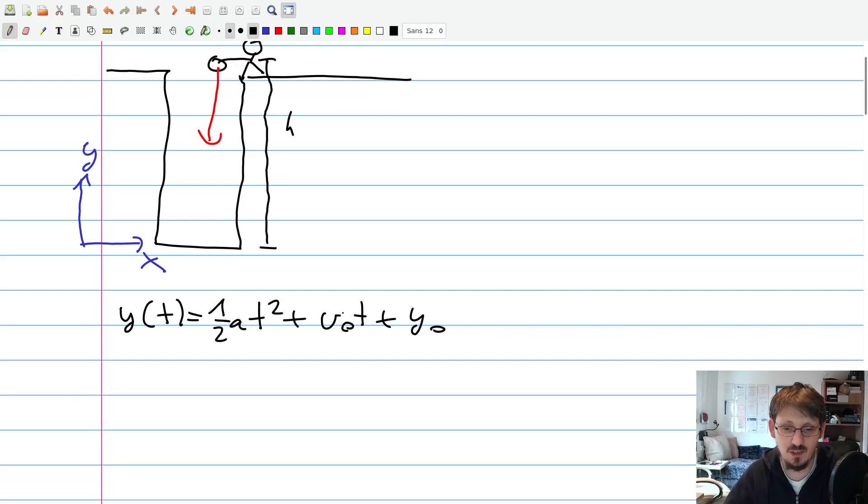In this case, the initial speed is per definition zero, just because we release the stone directly from the hand, which means it does not have any initial speed. However, it has an initial distance. If we assume that here this is actually defined as the height of zero, the surface of the water in the well, then the stone is released from the height h.